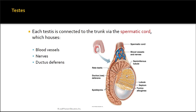Each testis is connected to the trunk by what's called a spermatic cord. Within this cord we have blood vessels, nerves, and the ductus deferens — also called the vas deferens. It is quite coiled where it changes its name to the epididymis, and then enters the testes.